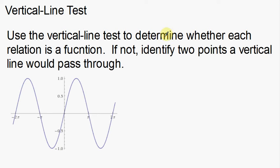Use the vertical line test to determine whether each relation is a function. If not, identify two points a vertical line would pass through — in other words, give evidence of why it is not a function.